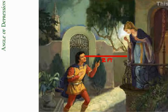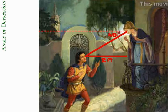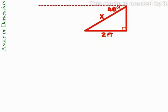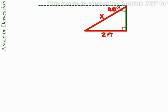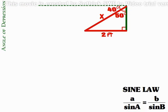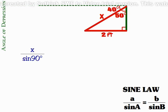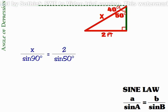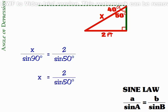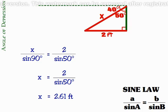From a balcony 2 feet from Romeo, the angle of depression is 40 degrees. What distance separates true love? Because the horizontal is perpendicular to the height of the triangle, the angle adjacent to the angle of depression is 50 degrees. Then, using sine law, we can determine the distance between Romeo and Juliet: X over sine 90 degrees equals 2 over sine 50 degrees. Since sine 90 is equivalent to 1, X equals 2 over sine 50 degrees. Using a calculator, X equals 2.61 feet.